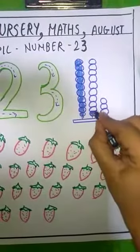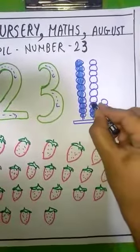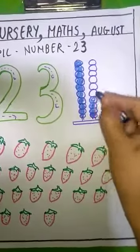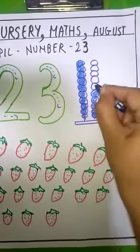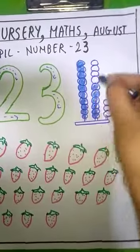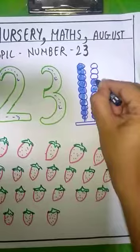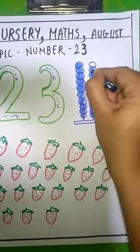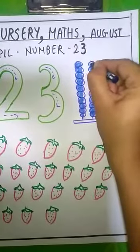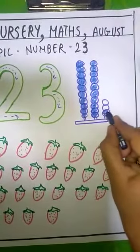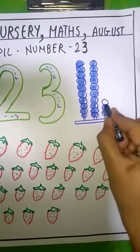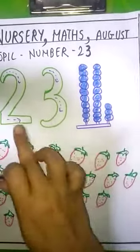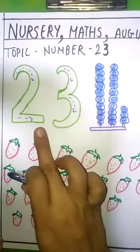11, 12, 13, 14, 15, 16, 17, 18, 19, 20, 21, 22 and 23 and this is the number 23.